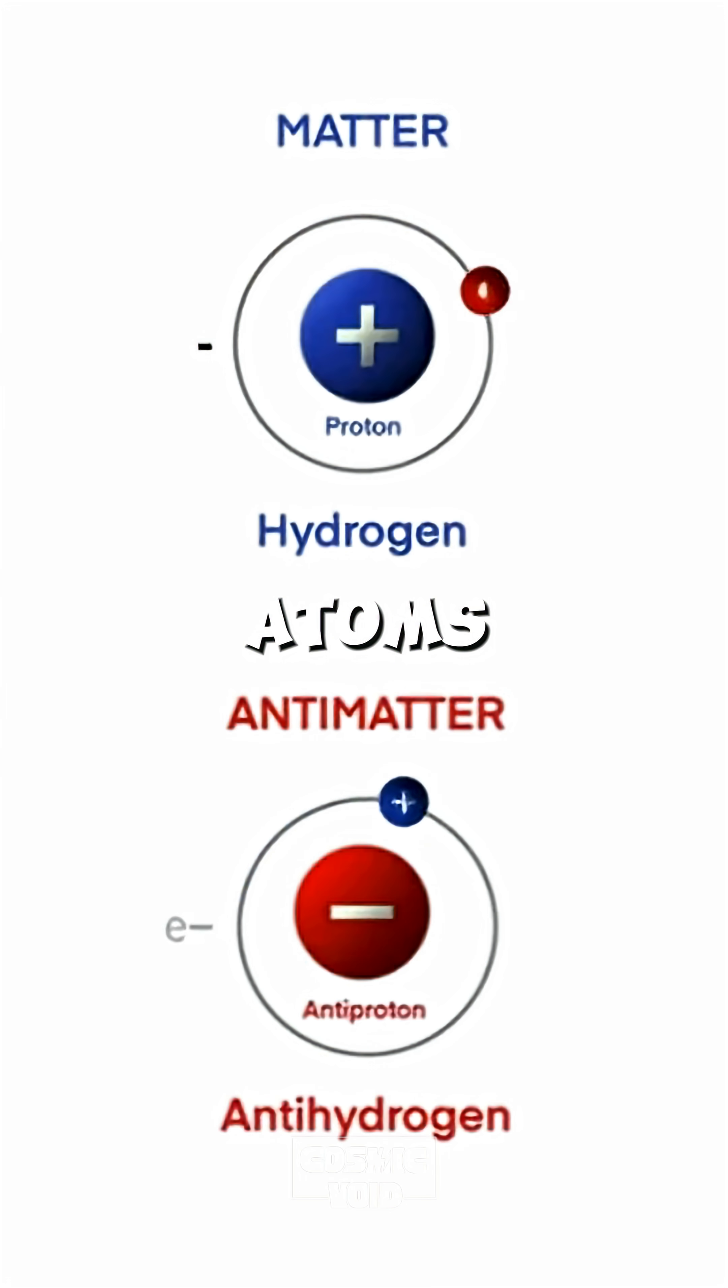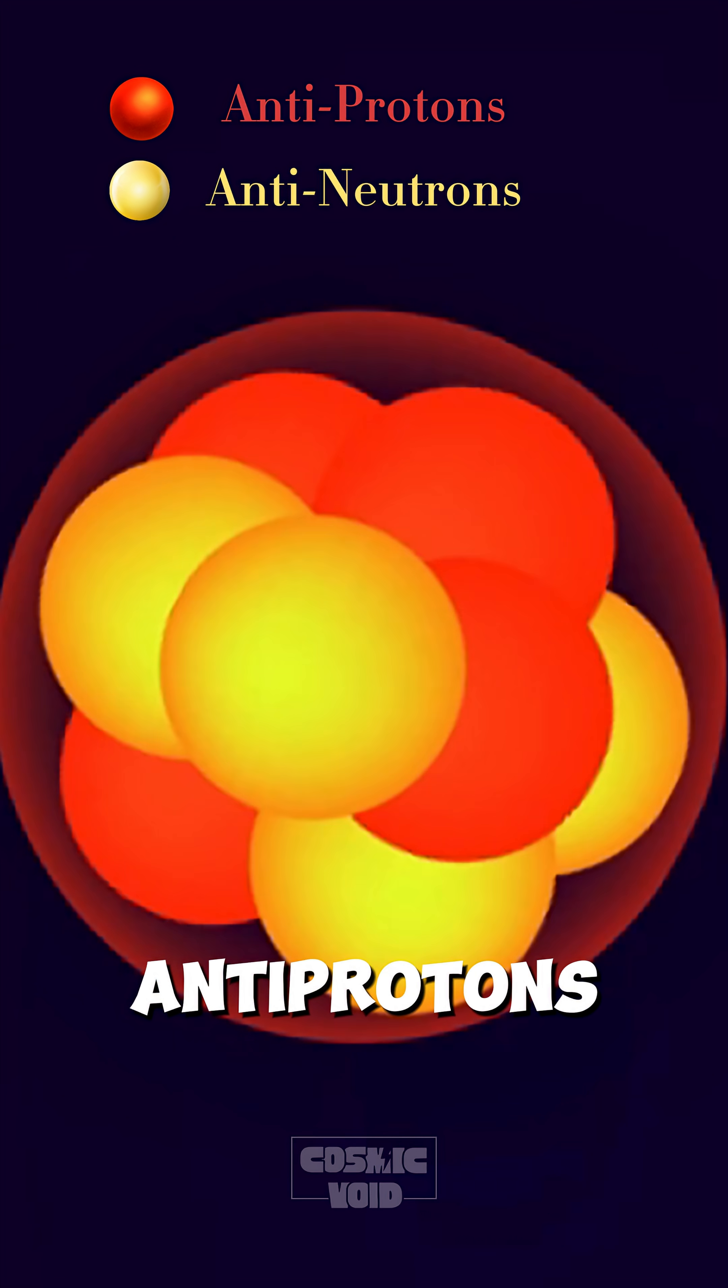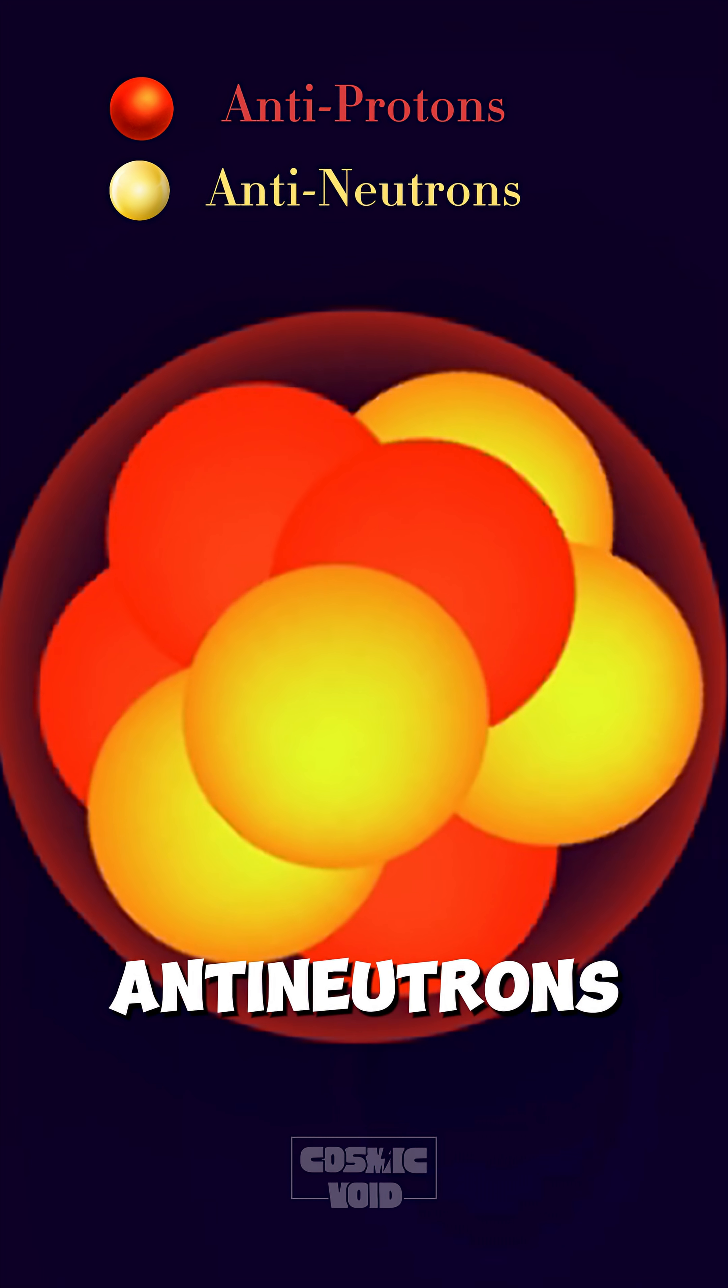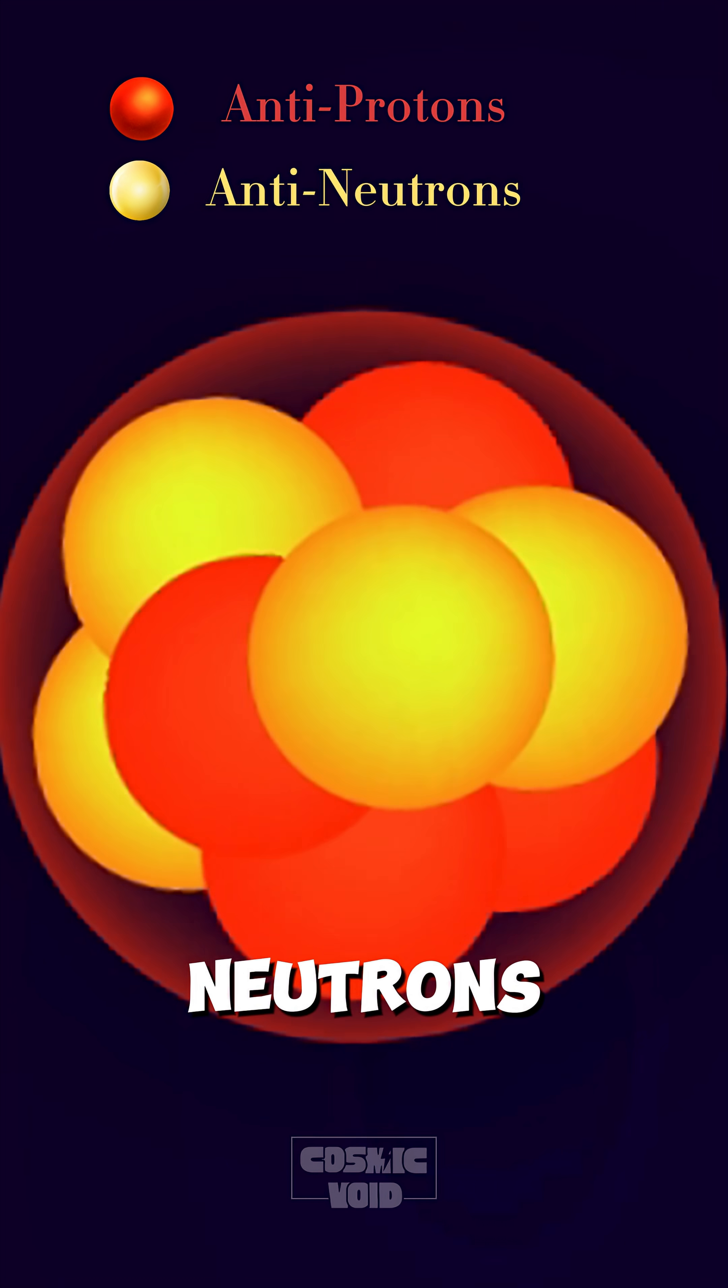Antimatter atoms, known as anti-atoms, mirror ordinary atoms, but with opposite charges. Their nucleus is made of antiprotons and antineutrons, just like regular atoms have protons and neutrons.